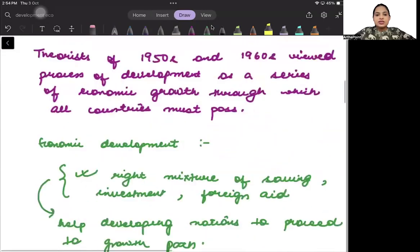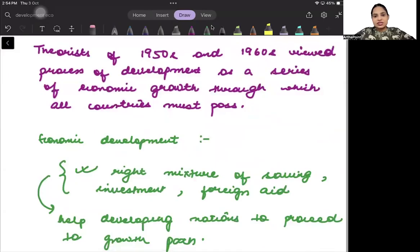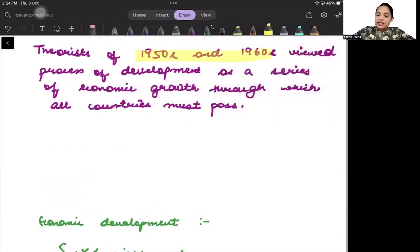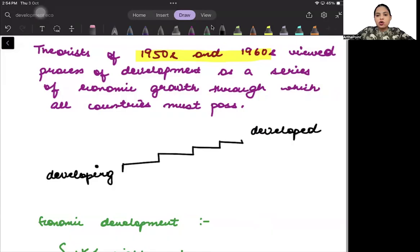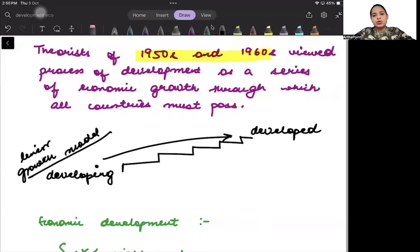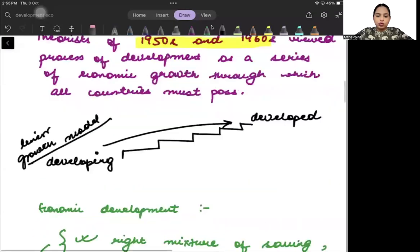During the 1950s and 1960s, development was thought of as a process of different stages through which a country must pass. If you have to go from becoming a developing country towards becoming a developed country, you have to pass through different stages of development. This is actually a linear growth model, named as the linear stages of growth model.